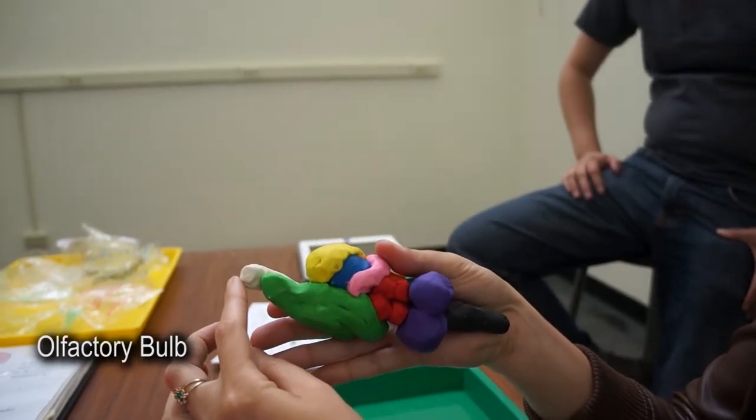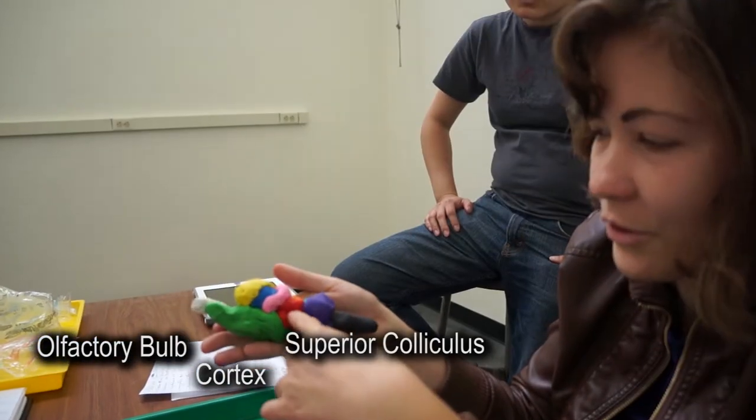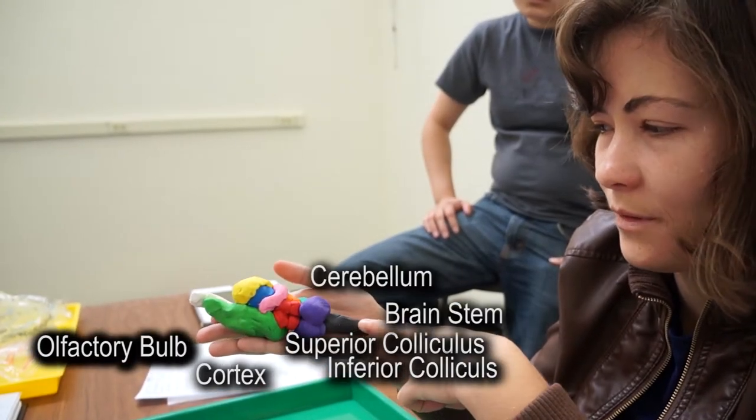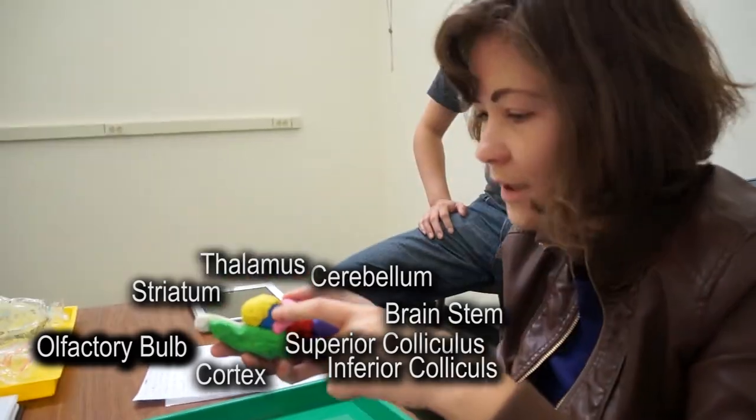Olfactory bulb, cortex, superior collicle, inferior collicle, cerebellum, brainstem, striatum, thalamus.